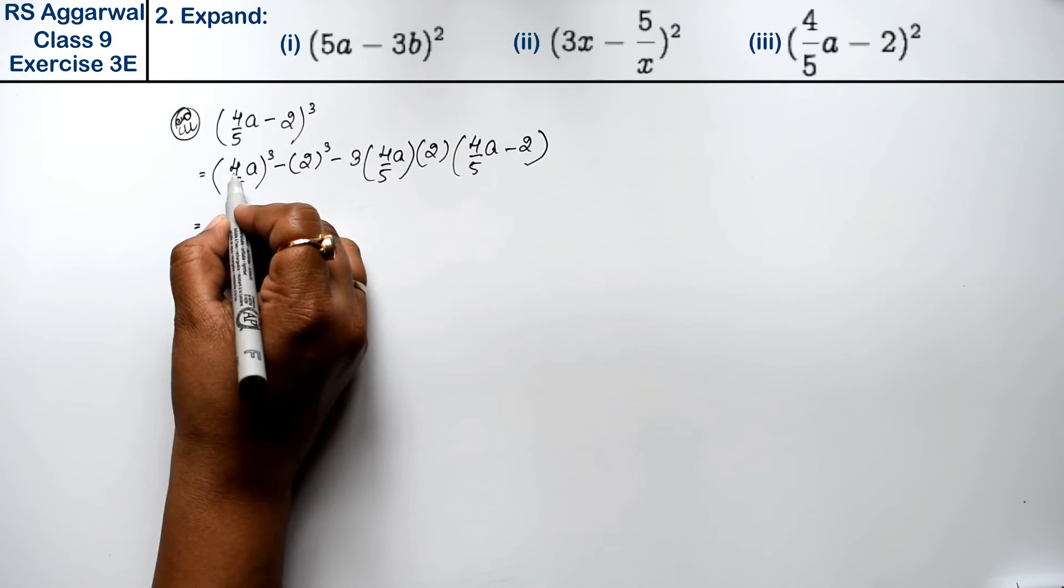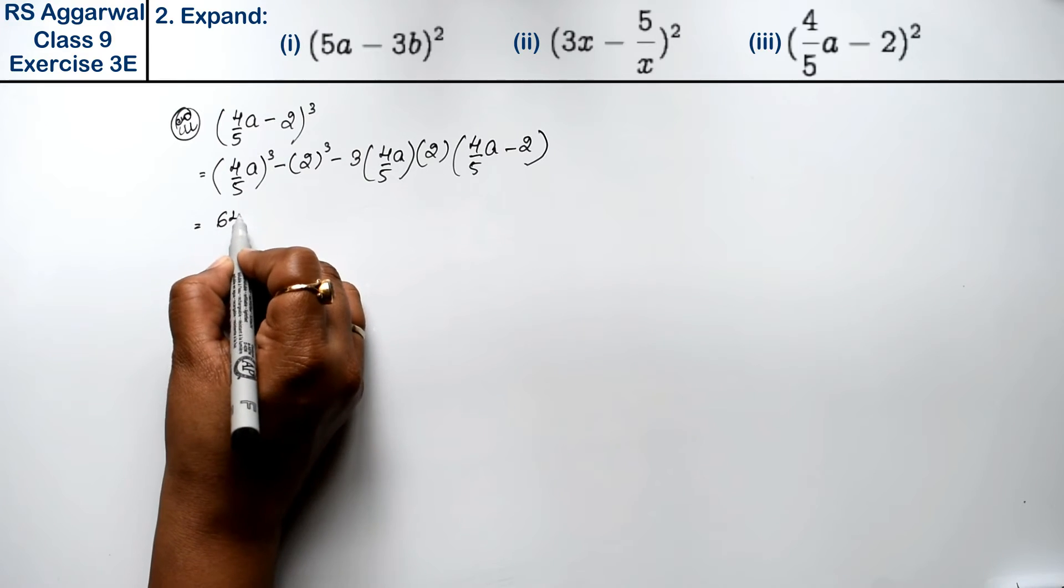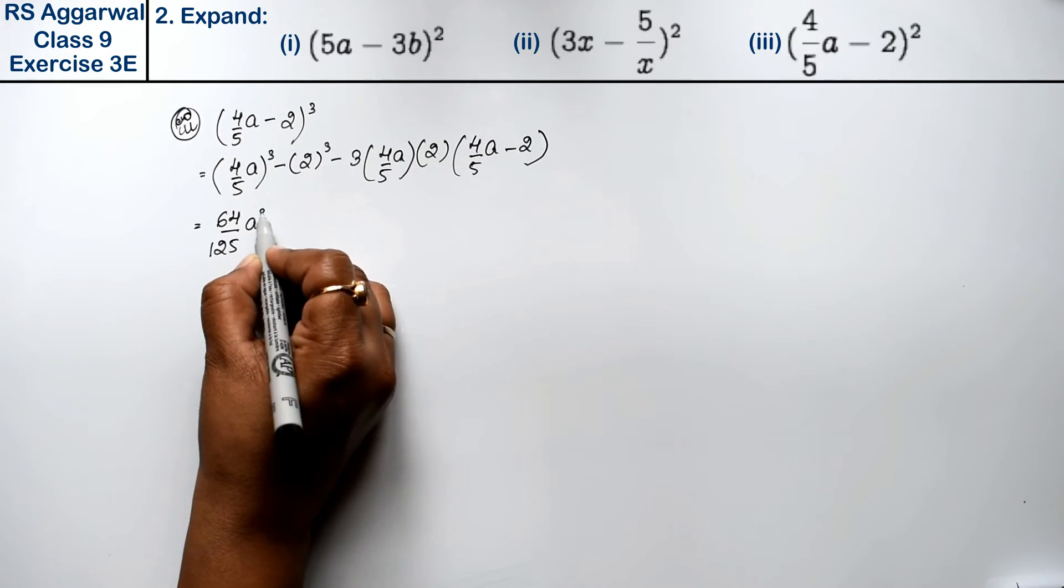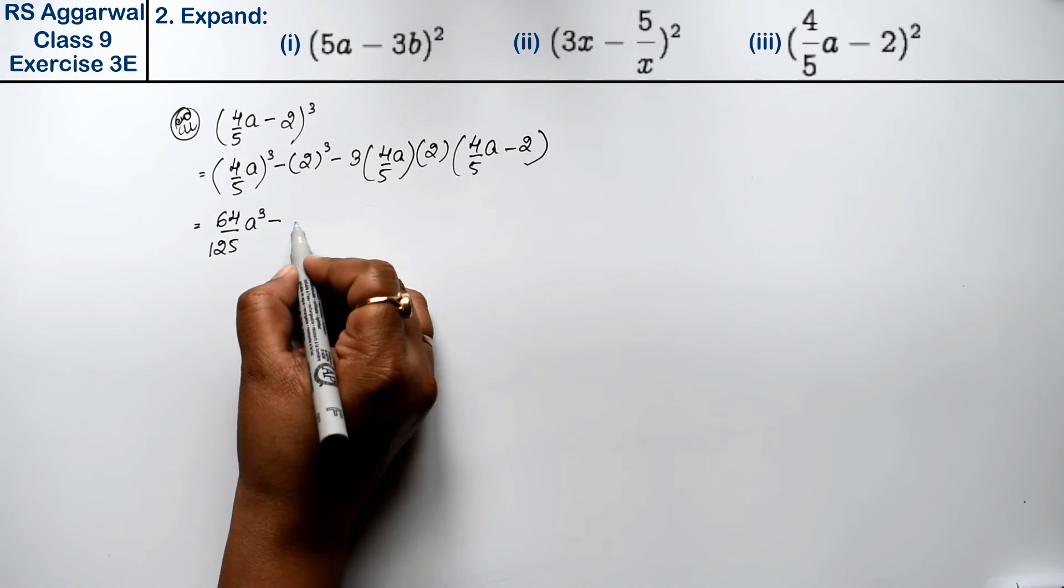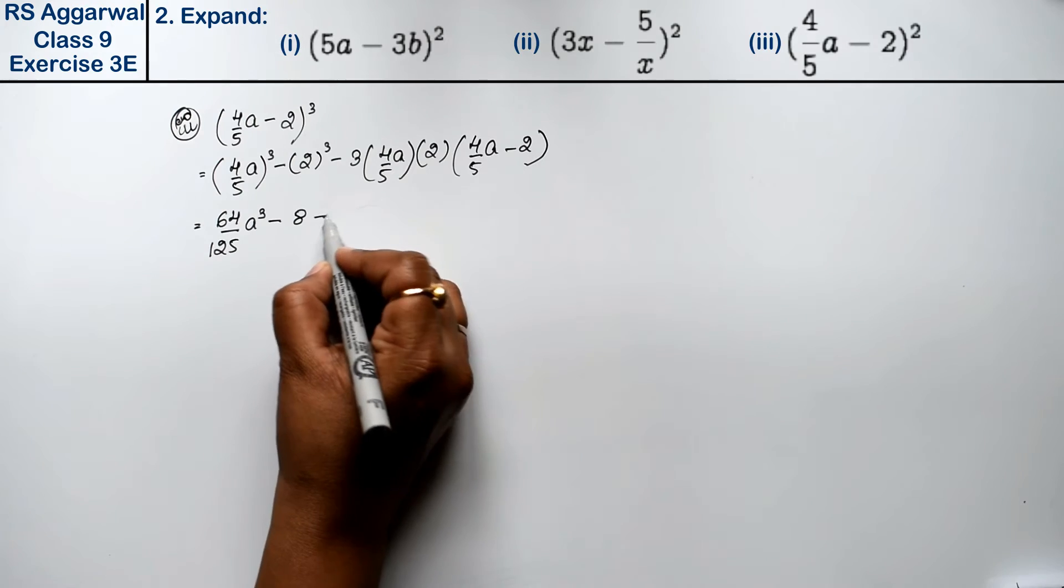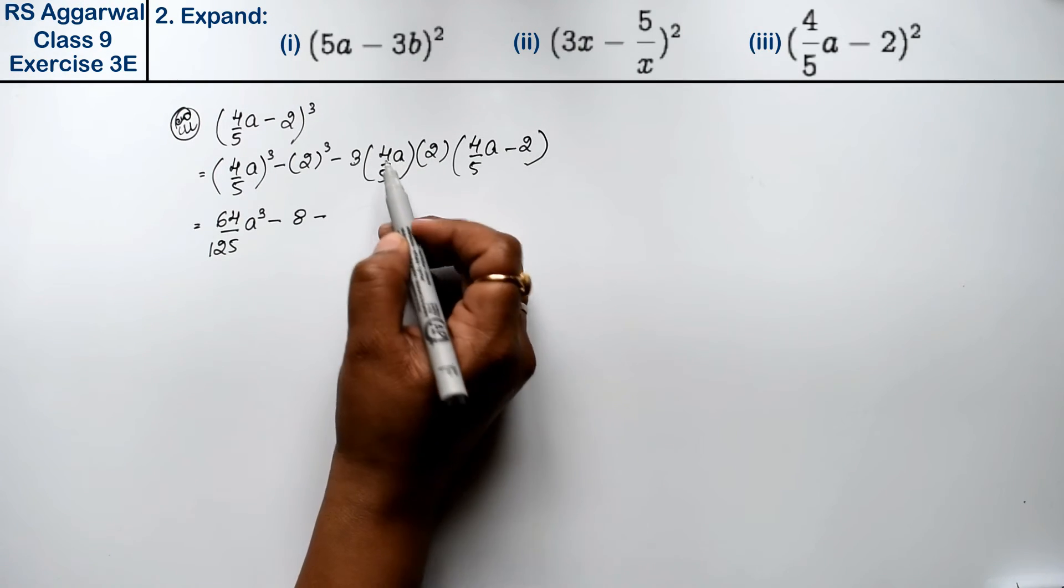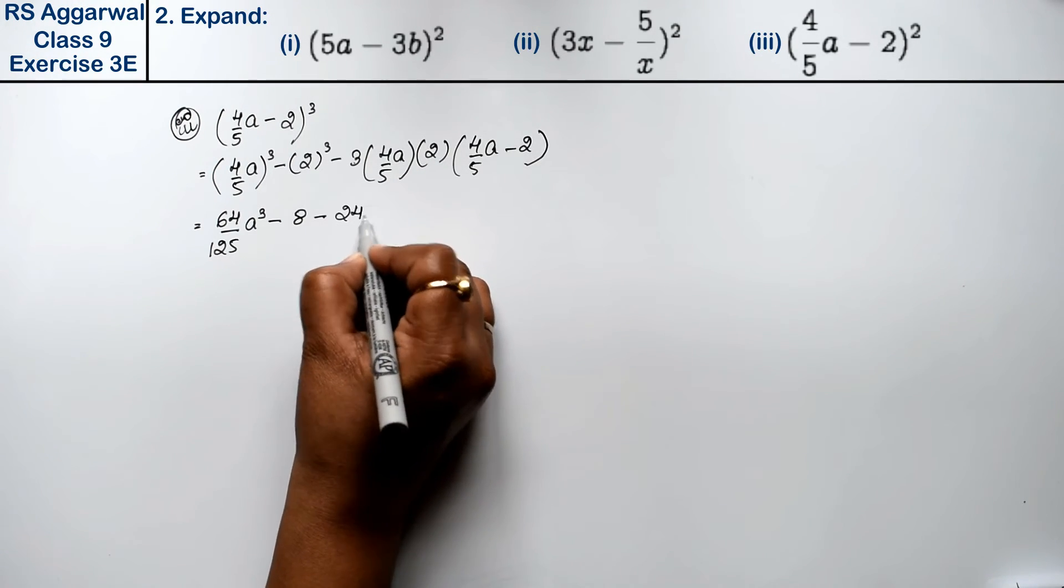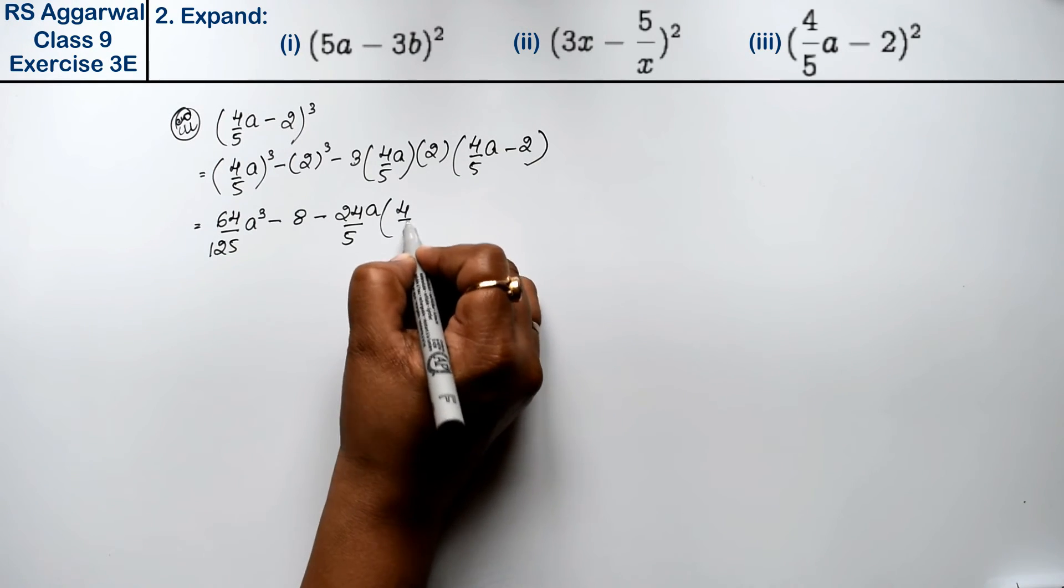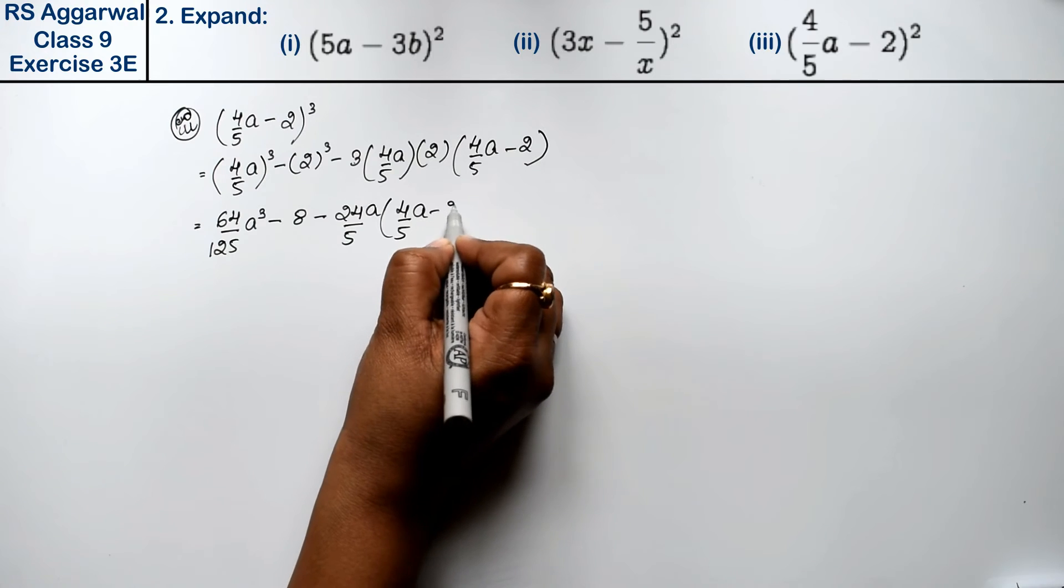Toh ab dekhiye, 4 ka cube hota hai 64 aur 5 ka cube hota hai 125a³ minus 2 ka cube hamein 8 hota hai. Ab yeh dekhiye, yeh kuch nahi kat raha hai toh upar ki upar ke saath multiply hai. 3×2 is 6, 6×4 is 24a upon 5, bracket mein (4/5a - 2).